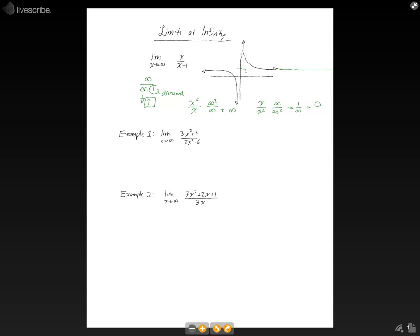Now, when we plug infinity in using the substitution method, that 5 and that negative 6 are going to be pretty inconsequential. So let's rewrite this as the limit as x approaches infinity of 3x squared over 2x squared, which then we can substitute infinity in and get 3 times infinity squared over 2 times infinity squared.